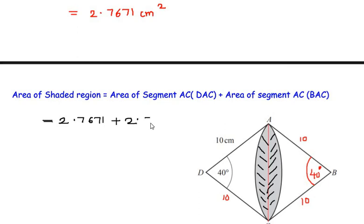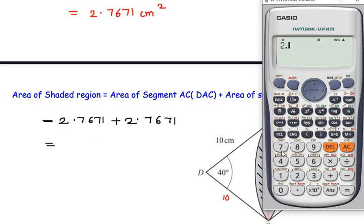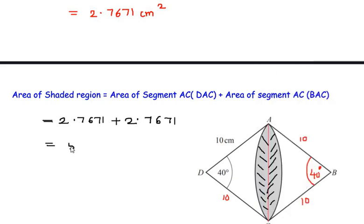So 2.7671, you can also multiply this answer by 2, that would also give you the same answer. So let me take it as 2.7671 plus 2.7671. So we get 5.5342. I'm rounding it to just two decimal places, so the answer is going to be 5.53 centimeters squared. So this is the area of the shaded region for the given diagram.